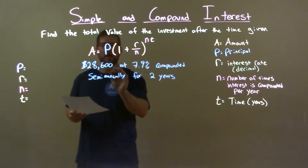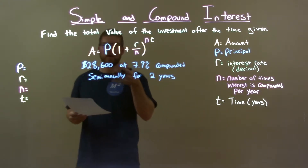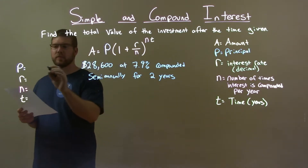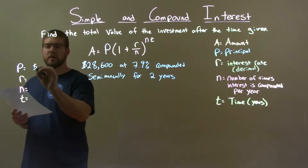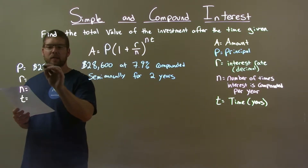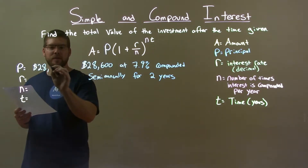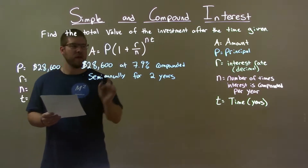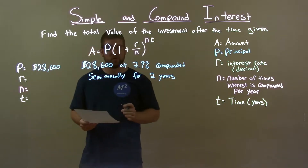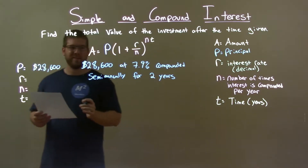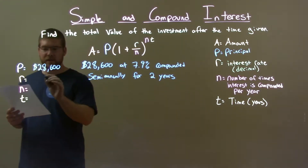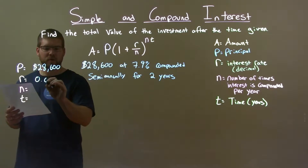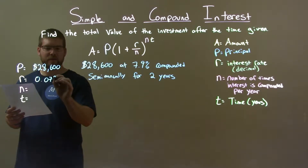From that, we have to find our variables. Our principal — the first thing written — is $28,600. They tell us an interest rate of 7.9%, which as a decimal we convert to 0.079.